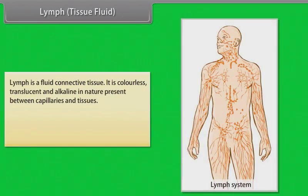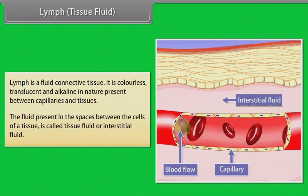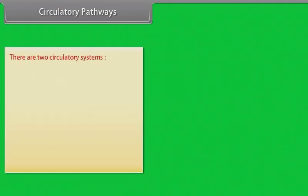Lymph is a fluid connective tissue. It is colorless, translucent, and alkaline in nature, present between capillaries and tissues. The fluid present in the spaces between the cells of a tissue is called tissue fluid or interstitial fluid. There are two circulatory systems: open circulatory system and closed circulatory system.